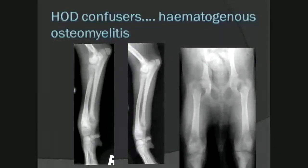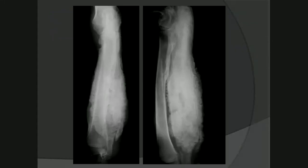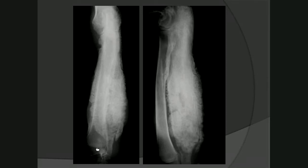Hematogenous osteomyelitis can be confused with HOD. In osteomyelitis, the distal metaphyses of the radius and ulna show an irregular radiolucent region consistent with lysis, but this is nothing like HOD, which shows a thinner, more organized parallel line. In osteomyelitis the metaphyses show patchy lysis rather than the linear HOD pattern. The pericortical reaction in osteomyelitis is a thick brush-like reaction that is much more extensive. Crucially, there is no parallel radiolucent line in the metaphysis — the physis and metaphysis are normal in osteomyelitis.